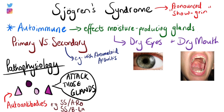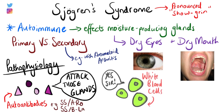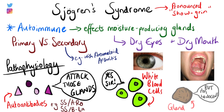Because of this, we have infiltration of lymphocytes like T cells and B cells into the salivary and lacrimal glands. This lymphocytic infiltration causes destruction of the gland by cell-mediated mechanisms and the secretion of cytokines, creating inflammation in the glands.